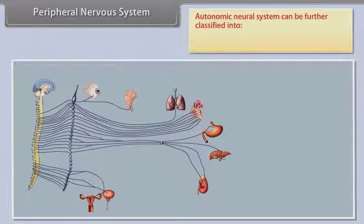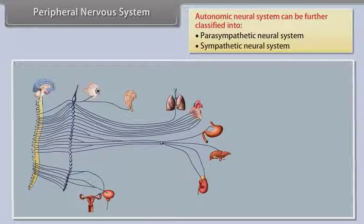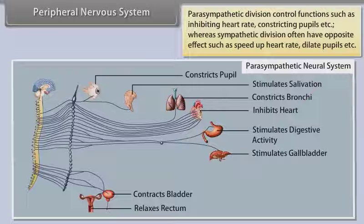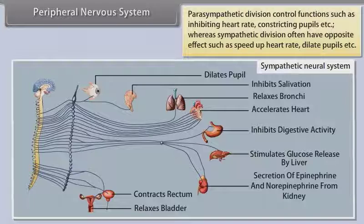Autonomic neural system can be further classified into parasympathetic neural system and sympathetic neural system. Parasympathetic division controls functions such as inhibiting heart rate and constricting pupils. Whereas sympathetic division often has the opposite effect, such as speeding up heart rate and dilating pupils.